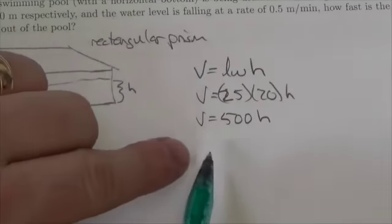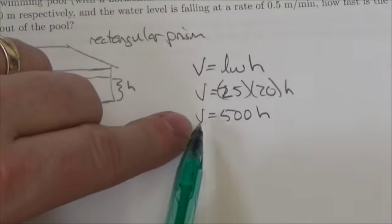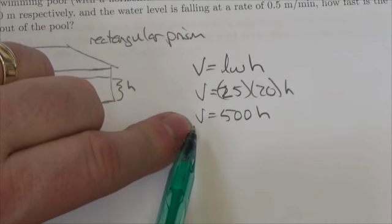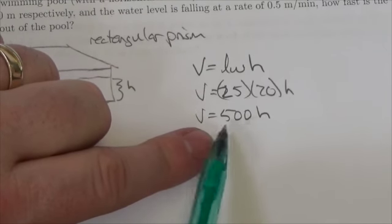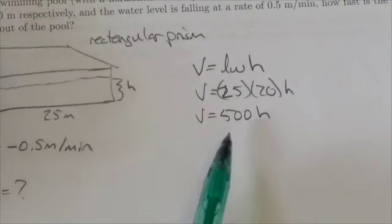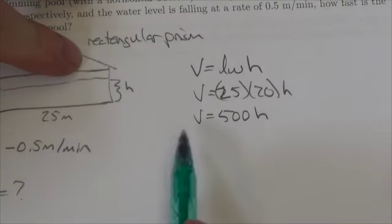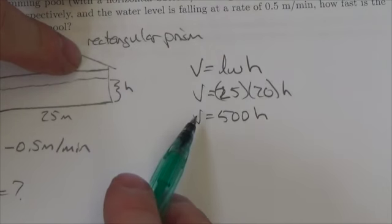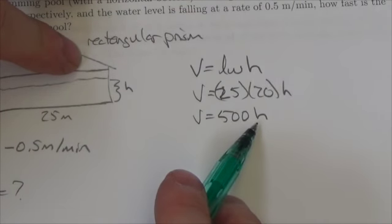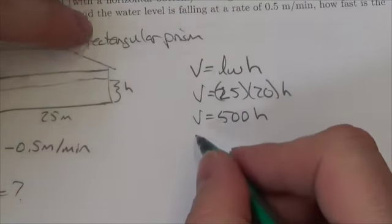Now I've got a variable that is changing in time in terms of a variable that is changing in time. So I'm going to take the derivative. I'm going to take it implicitly because time is not mentioned here, although volume and height are both implicit functions of time.